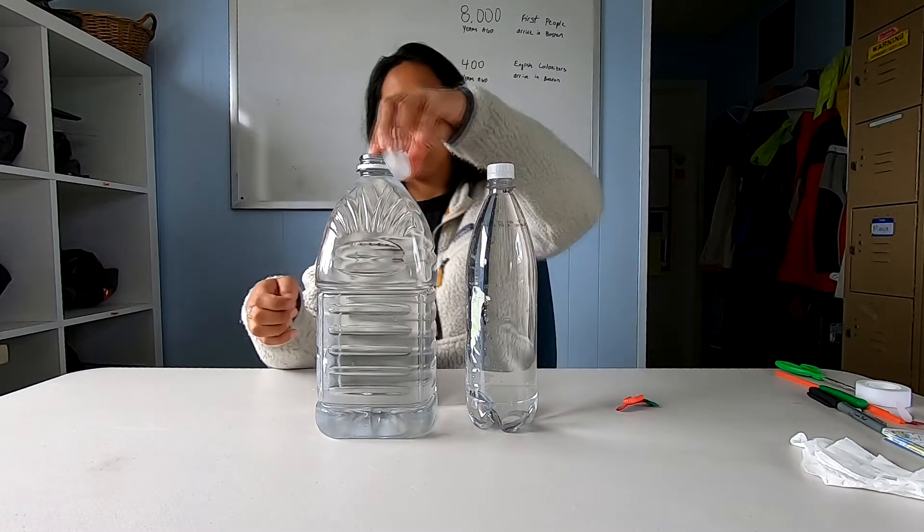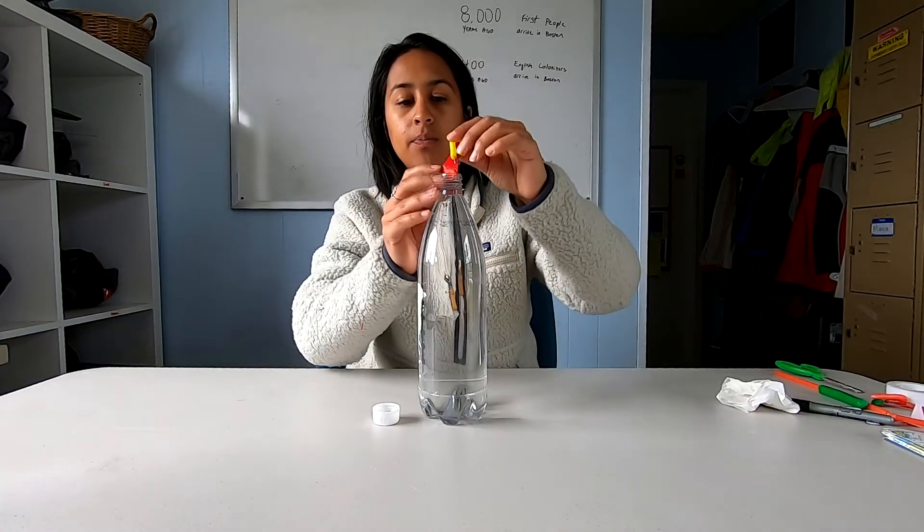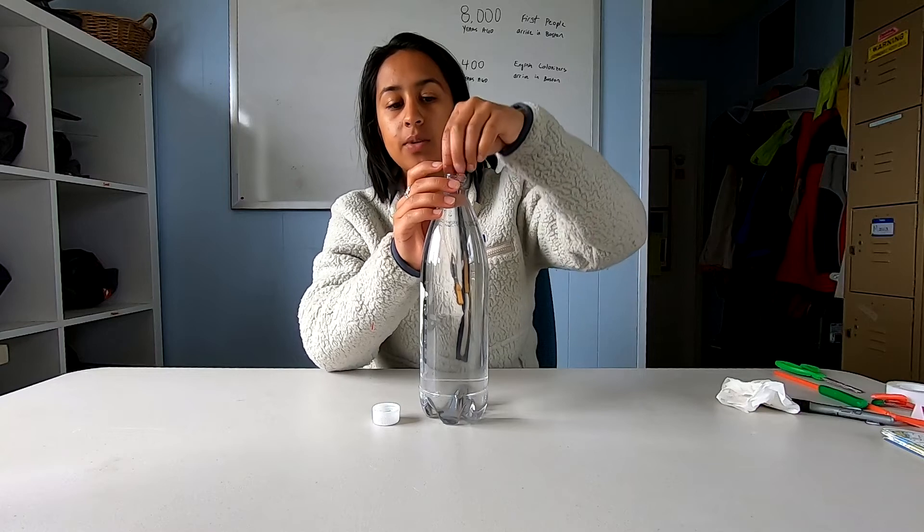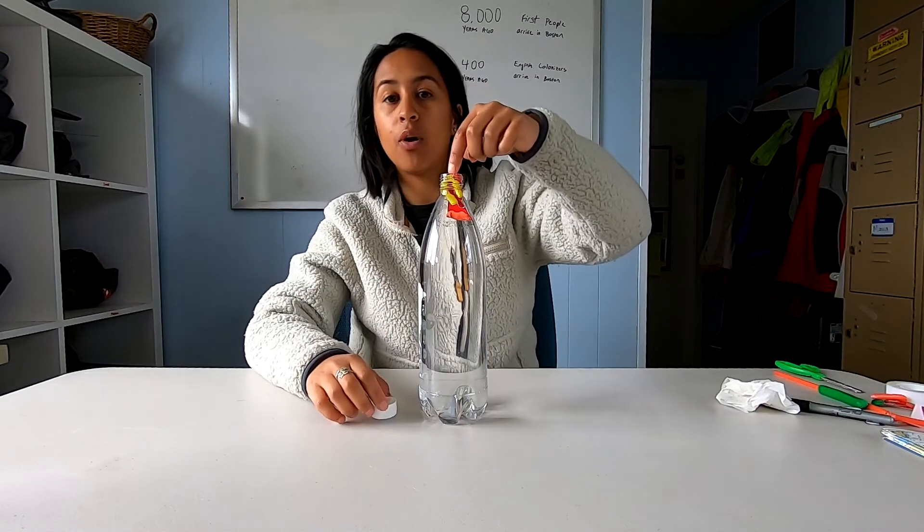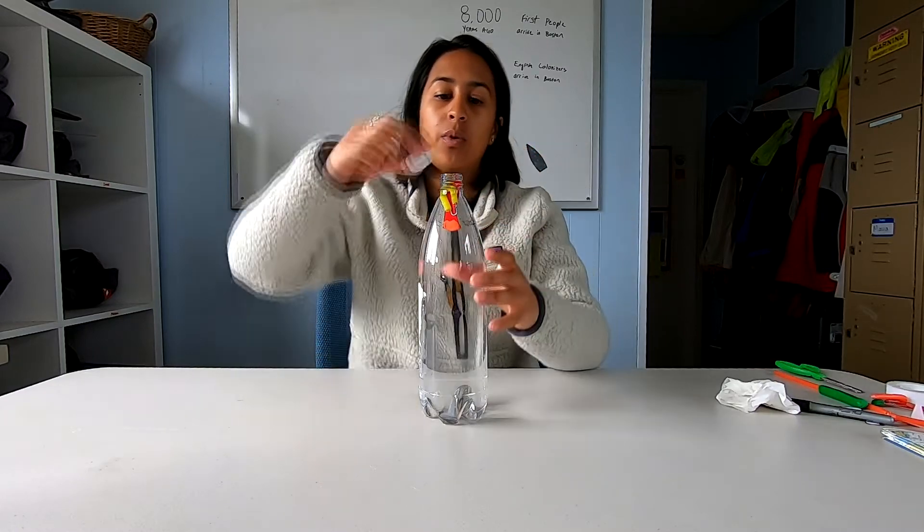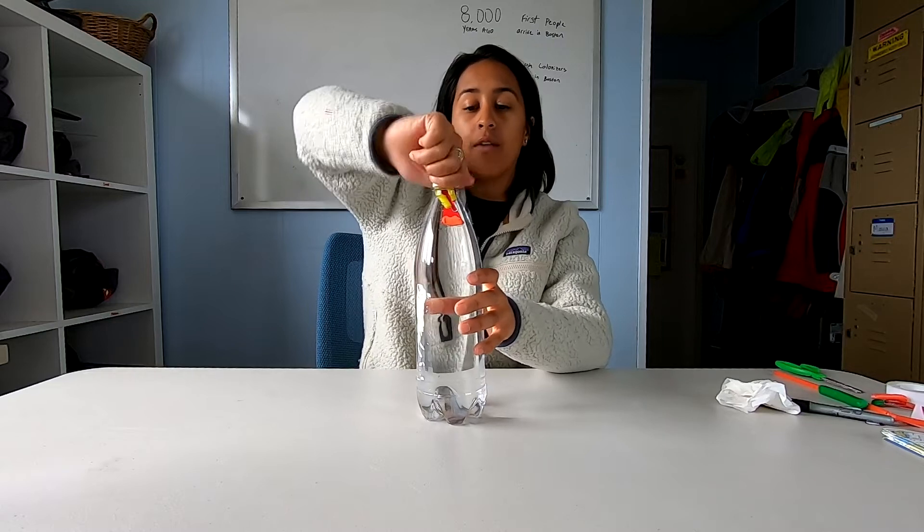So we're going to go ahead and put this to the side. Alright, so we're going to take our scuba diver and put him into the bottle. Now when you put your scuba diver into the bottle, a little air bubble forms inside of the straw. So when we put our cap on, we want to make sure this is screwed on very, very tight.